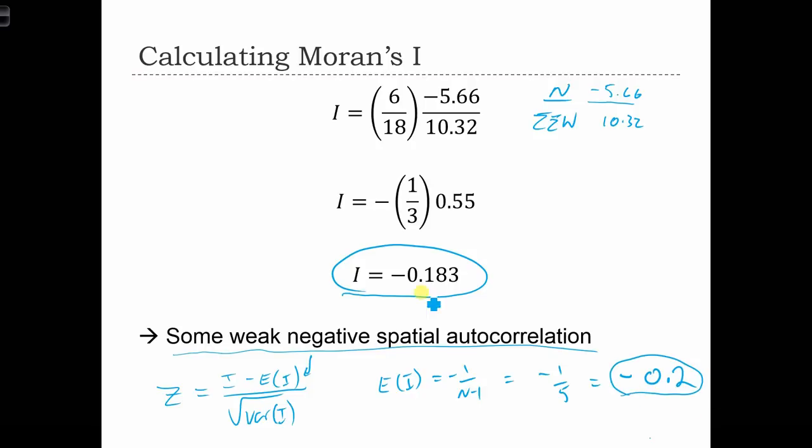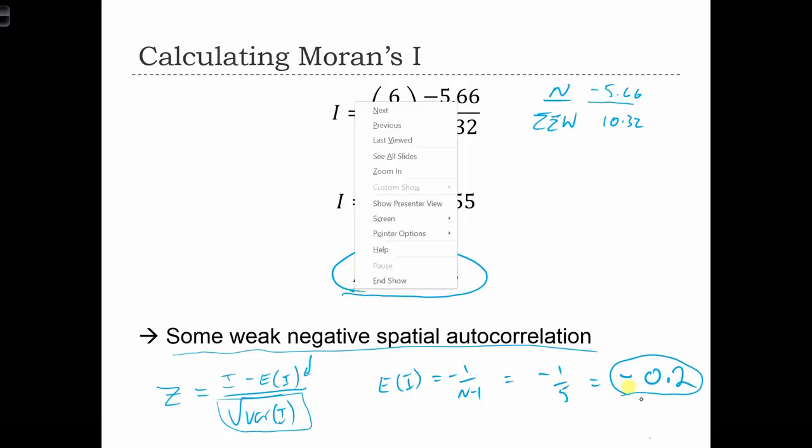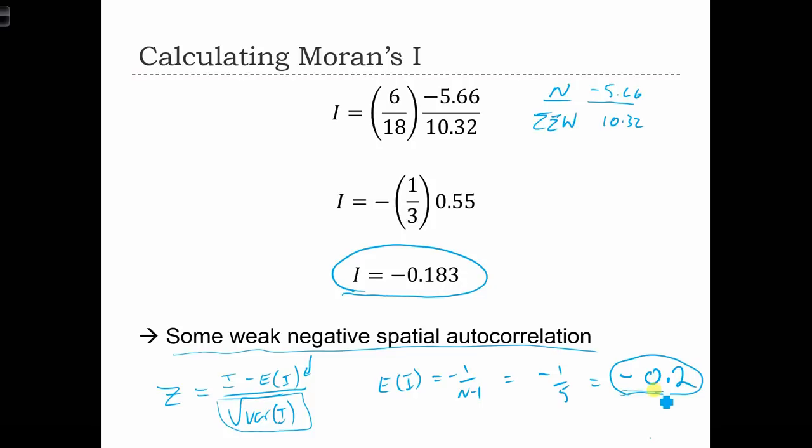We have an i of minus 0.183. So even though we aren't going to compute the full z-test because we don't have an estimate of the variance in this case, I'm pretty sure that this isn't going to be significantly different to this random case. And in fact, we would conclude in this case that despite i being less than 0, it's not significantly different to this random i that we would expect to see. And therefore, we would fail to reject a null hypothesis of randomness in this case.